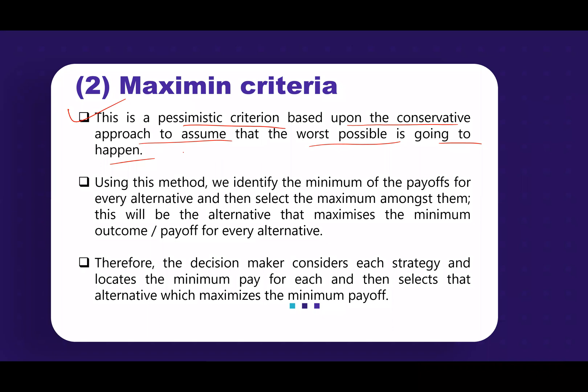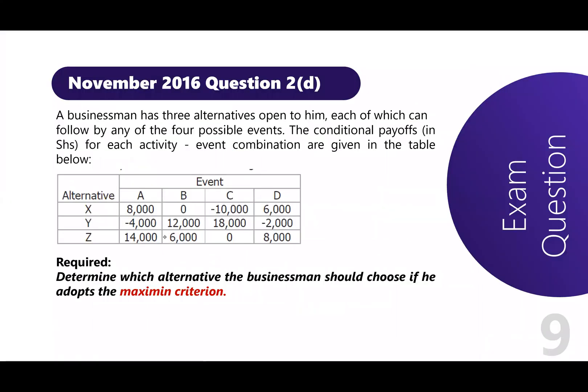The worst is going to happen. Using this method, we identify the minimum of the payoffs for every alternative and then select the maximum among them. This will be the alternative that maximizes the minimum outcome or payoff.